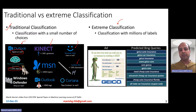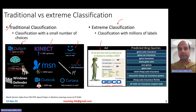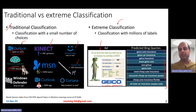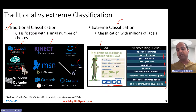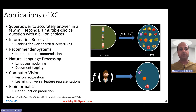Extreme classification differs exactly in that respect — it is classification with millions of labels. For example, given this ad from Geico, you have to tell what Bing queries you should show this ad for. These are called ad keywords or bid phrases for which Geico should bid, so as to show this ad to users who find them relevant and click on them. There are possibly hundreds of millions of possible queries or bid phrases, among which some are relevant to Geico. Given an ad, I want to figure out which bid keywords are relevant from a space of hundreds of millions of such queries, and choose a limited few — not just one, but a limited few.